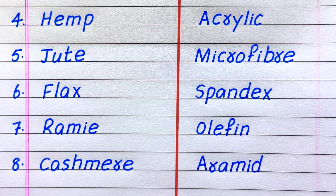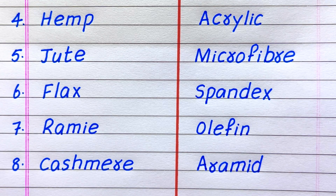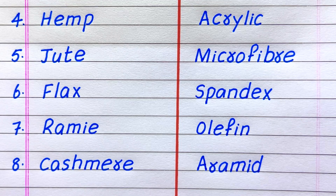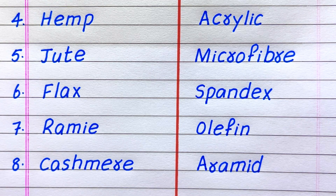4th example of a natural fiber is hemp, 5th jute, 6th flax, 7th rami, 8th kashmiri. 4th example of a synthetic fiber is acrylic, 5th microfiber, 6th spandex, 7th olefin, 8th aramid.